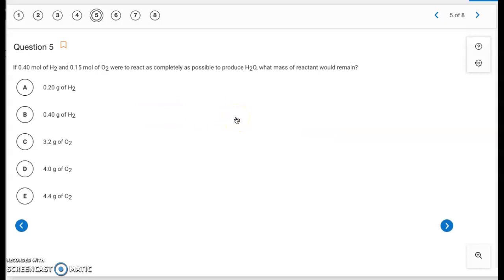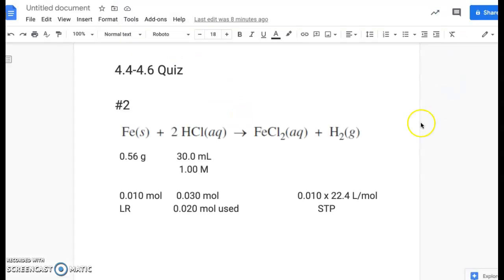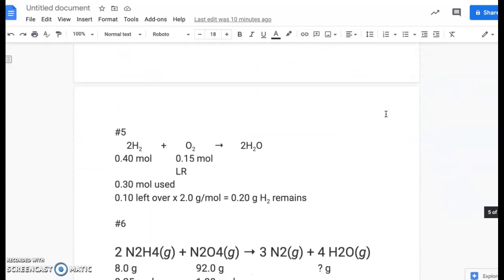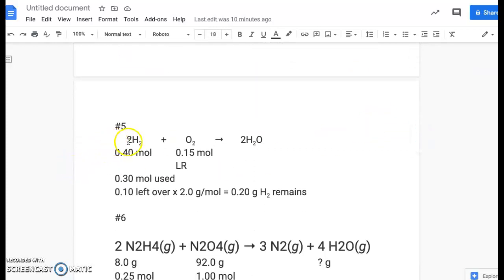Okay, question five. We have 0.4 moles of H2 and 0.15 moles of O2 were to react as completely as possible to produce H2O. What mass of H2O would remain? Okay, going back to the worksheet here. Scroll down to this one. So it doesn't give us a balanced equation, but we can figure it out. We know H2 and O2 are the reactants, and we're producing H2O. So then you just balance it with a 2 here and a 2 there. So you do have to have the balanced equation to be able to get this one done.